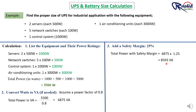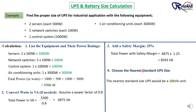This is the total consumption of our system. Since an 8593 VA UPS is not available in the market, we go with the nearest standard size available, which is 10 KVA. This size of UPS is perfect for the given load.